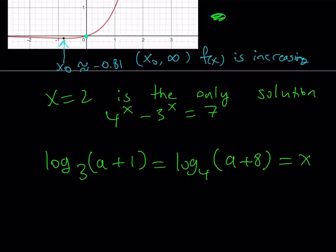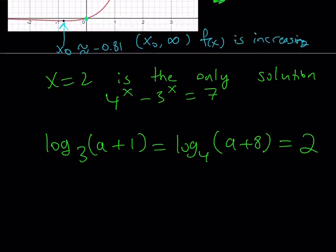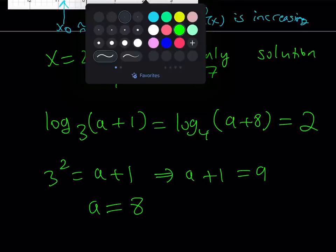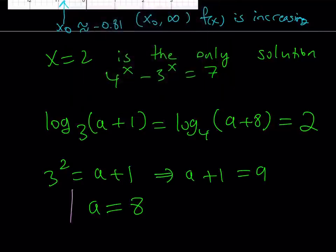I set both of these equal to x. Now I'm saying that x is equal to 2. So I'm going to go ahead and replace x with 2 and see what happens. It doesn't matter which one you use, the first or the second because it's going to give you the same value. We can safely say that 3 to the second power equals a plus 1. From here I get a plus 1 equals 9. And finally we get a equals 8. And that is going to be the only solution to this problem.